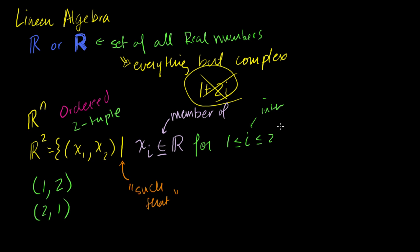Now I could have written this a bunch of different ways. This is almost silly how much effort I'm taking to write this. I could have written ℝ² equals the set of all ordered tuples (x₁, x₂) such that x₁ and x₂ are a member of the reals. That would have been an easier way to write it.